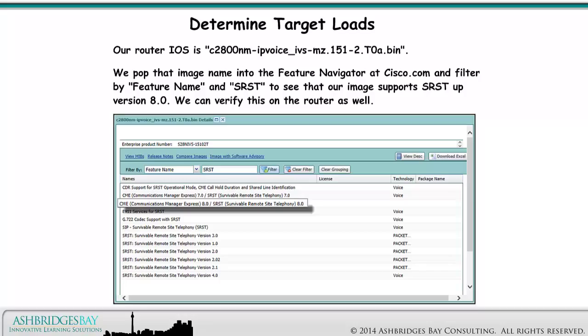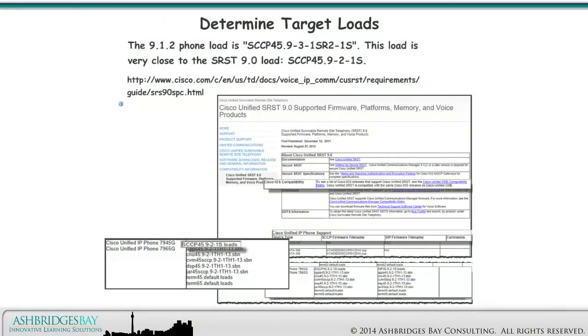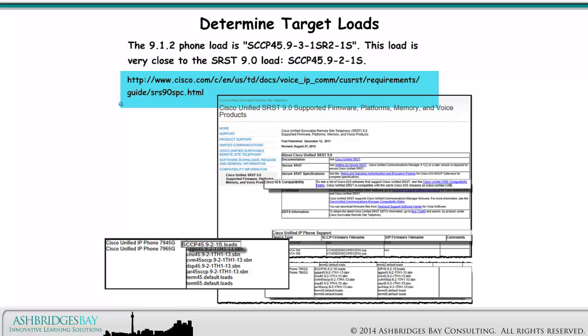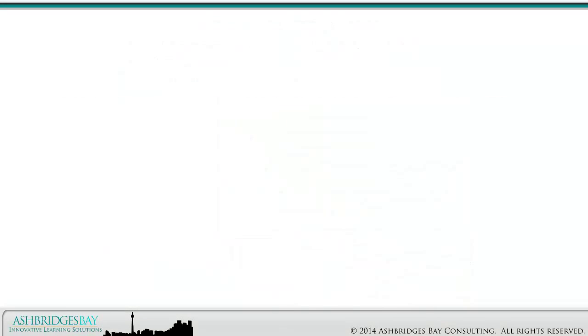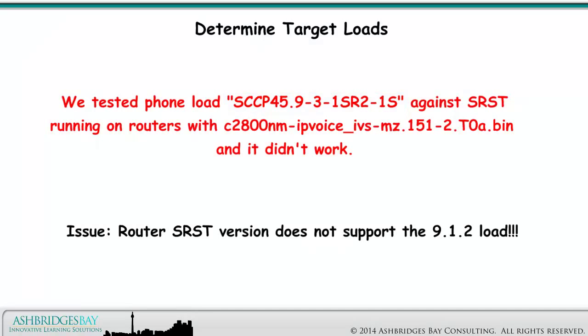Our router iOS is c2800nm-ipvoice-ivs-mz.151-2.toa.bin. We plug that image name into the Feature Navigator at cisco.com and filter by feature name and SRST to see that our image supports SRST up to version 8.0 — we can verify this on the router as well. This is the 9.1.2 phone load, which is very close to the SRST 9.0 load. This link shows us the SRST 9.0 supported firmware. We tested the phone load against SRST running on routers with this iOS and it didn't work, so we have an issue: the router SRST version does not support the 9.1.2 load.